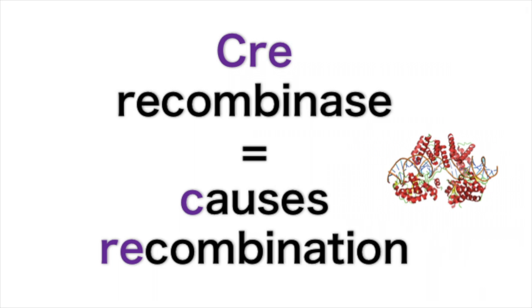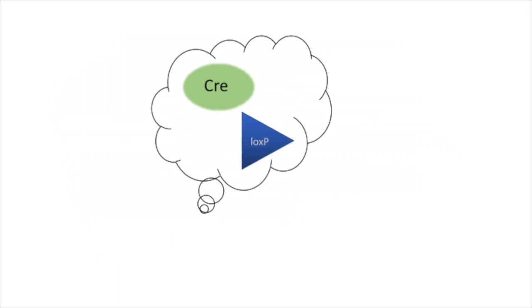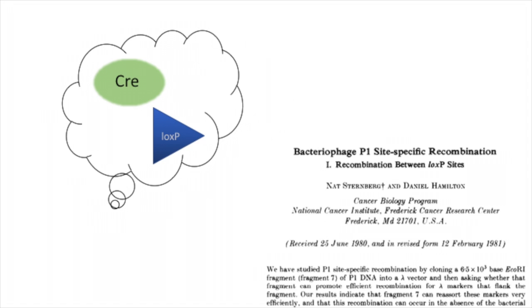Cre recombinase is a 38 kilodalton protein that was identified as being important in viral replication during the lysogenic phase of the P1 bacteriophage. The idea of using the Cre-LoxP system for inducible genetic recombination had been around for a considerable amount of time before SCRAMBLE was developed.